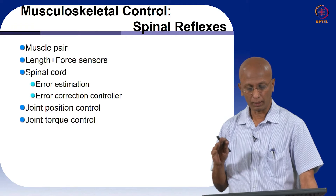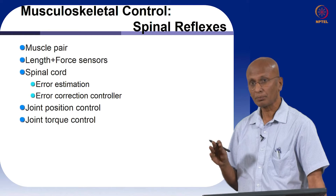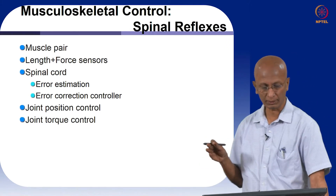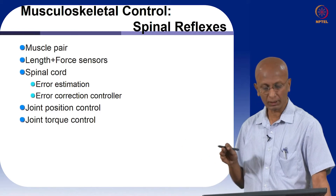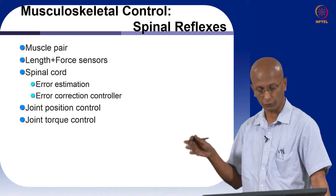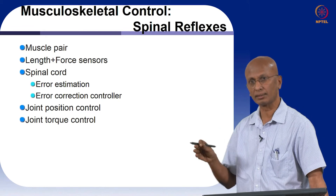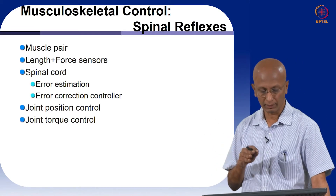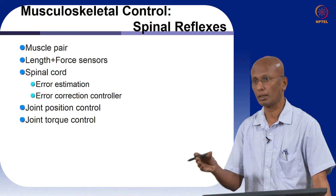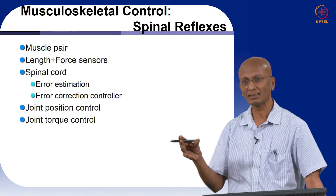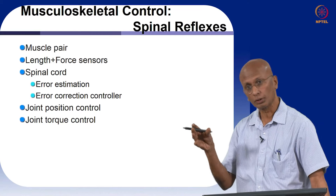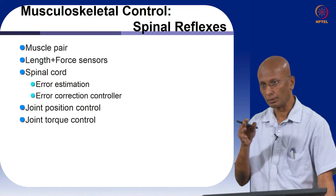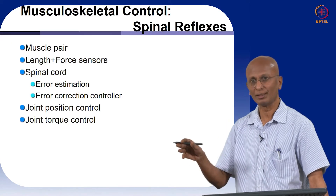When we talk about a single joint, we have a muscle pair that is part of a physiological system where we have reflex control — a feedback control system — as well as a voluntary input to this muscle reflex. The feedback control system uses length and force sensors to control length and force. The spinal cord estimates the error between the desired position, desired length, and desired angle of the joint, and also estimates the error in the desired force. Both these error signals are computed in the spinal cord, which has the alpha motor neuron that controls the muscle and acts as the error correction controller.